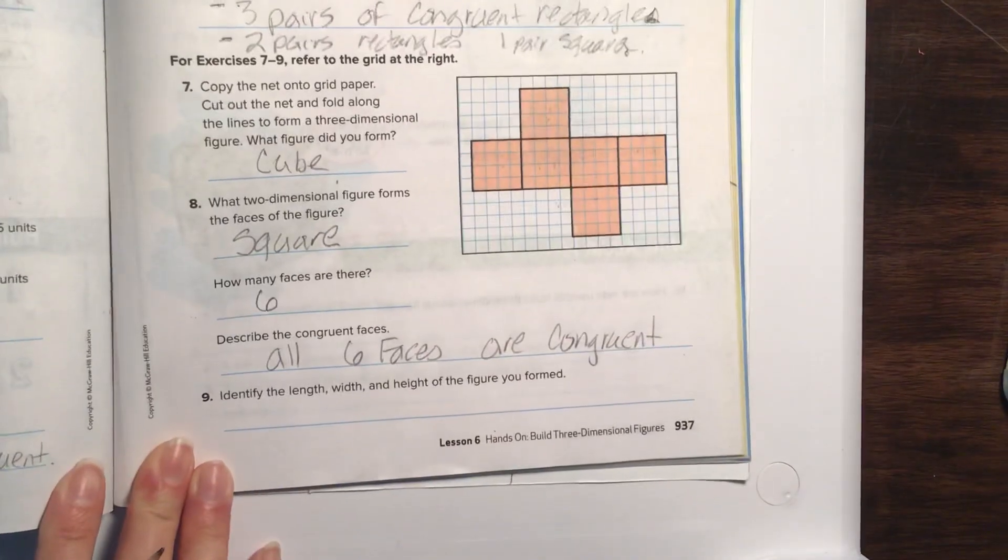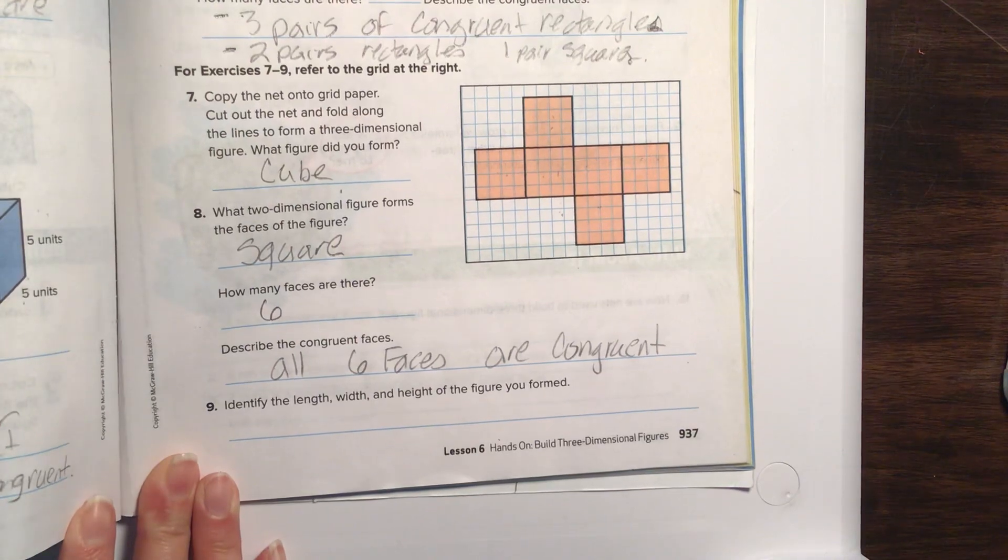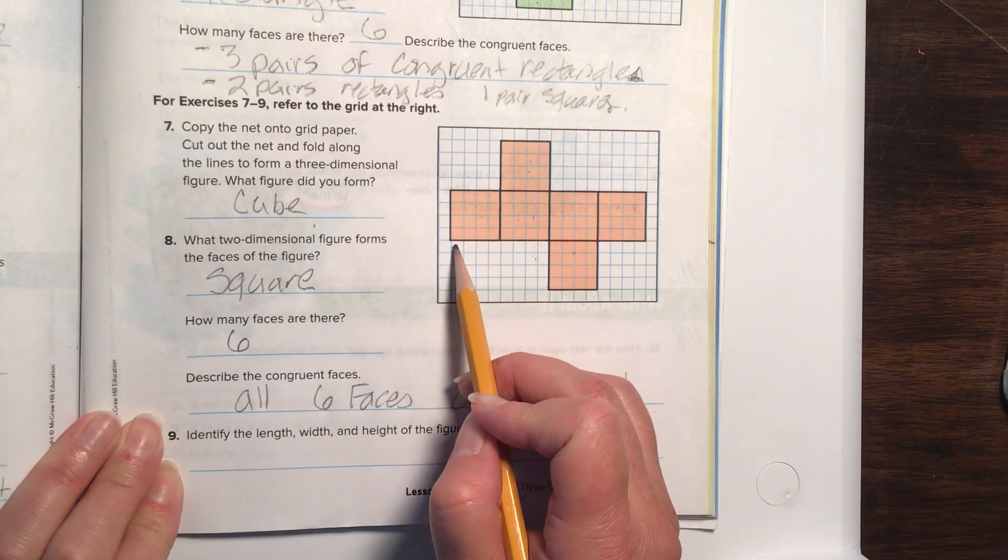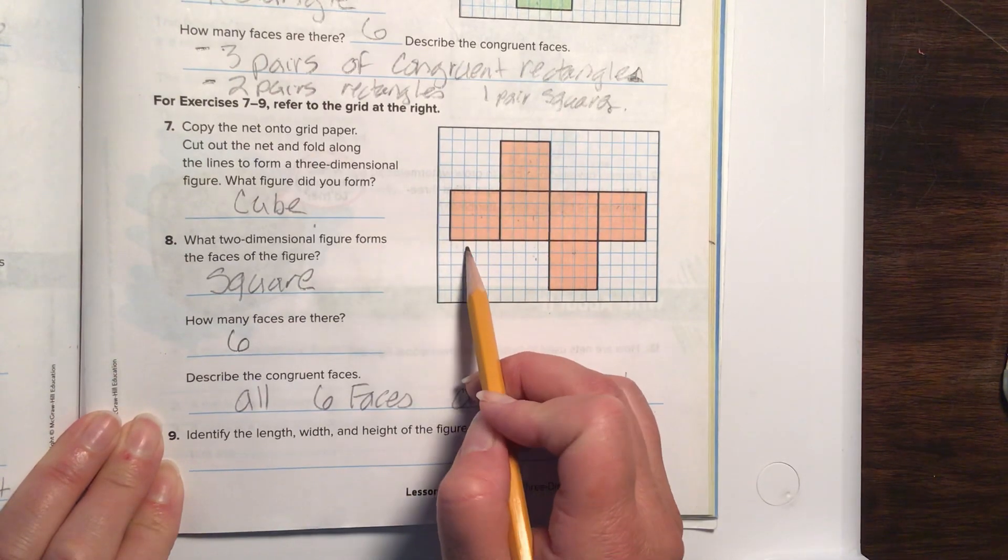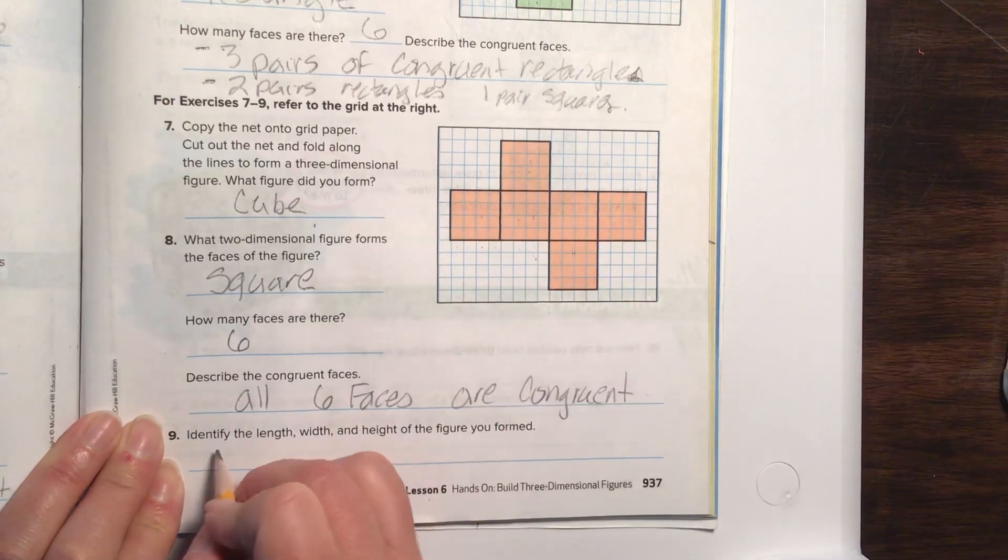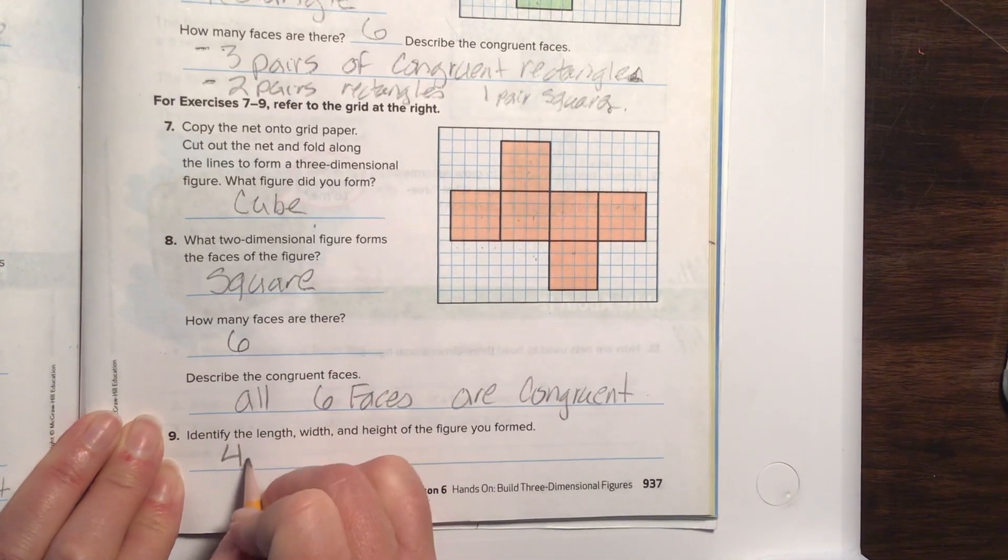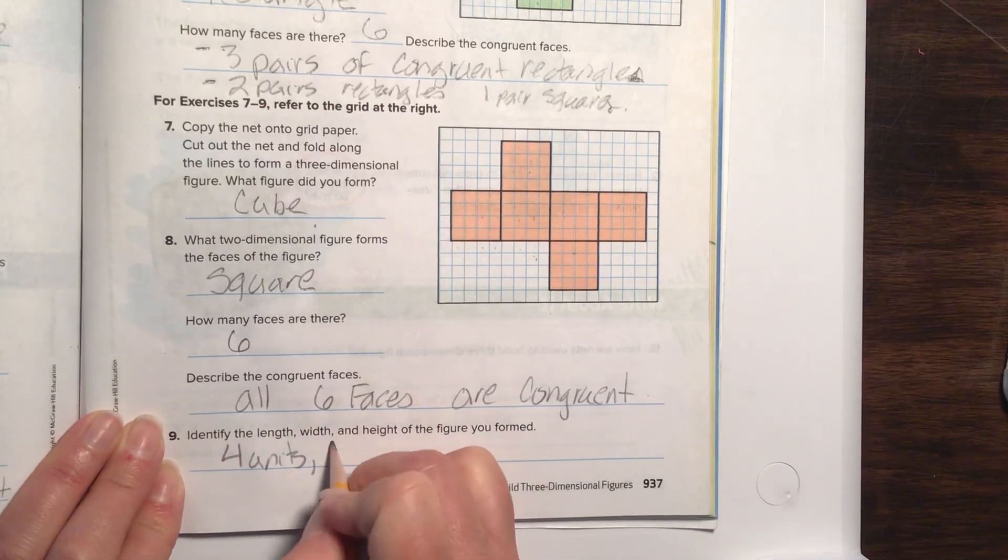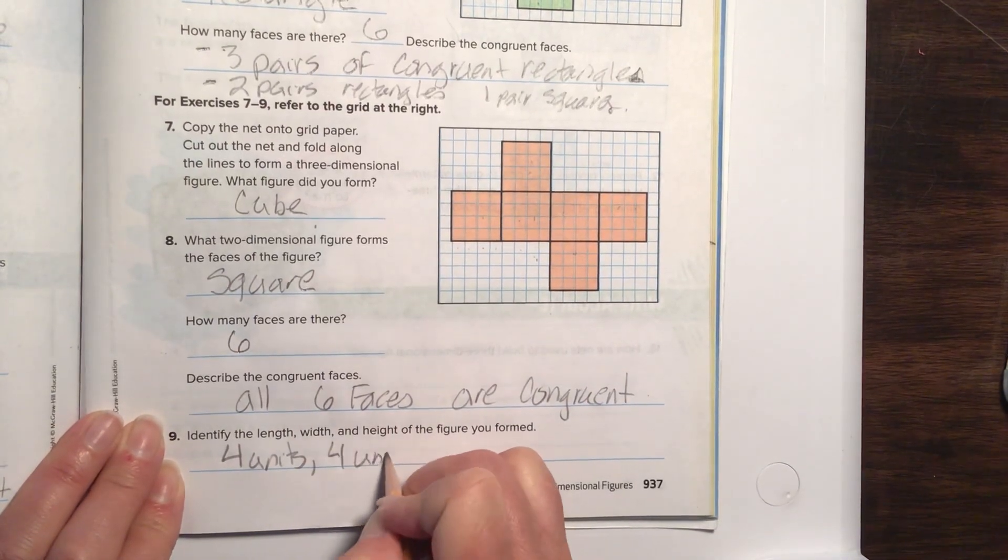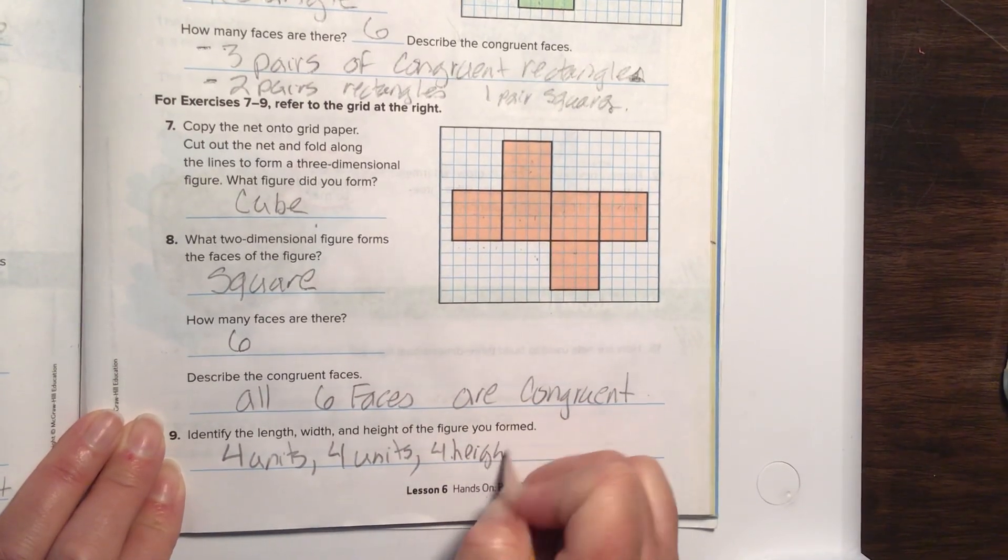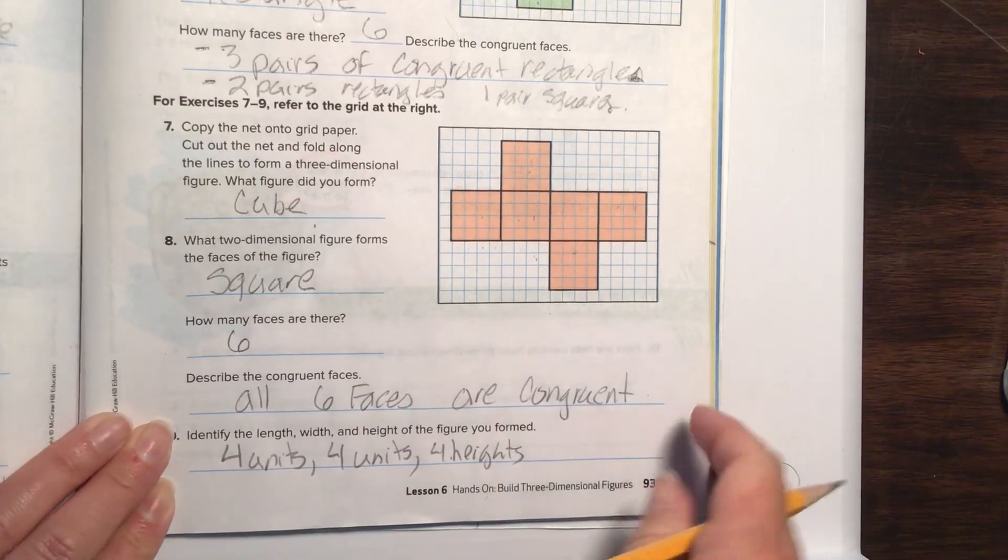Now, it wants us to identify the length, the width, and the height of the figure we just formed. This is where it's kind of handy where it's been on graph paper. So, let's count these squares. One, two, three, four. So, if we put all this together into a cube, it's going to be four units length, and then four units as the width, and then four units as the height. Easy peasy. All right, let's turn to page 938.